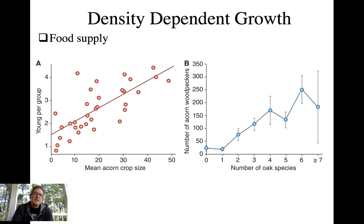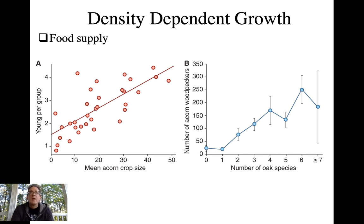Here are some examples looking at acorn woodpeckers — as acorn crop size increases, you get more young produced. The more food available, the greater the production of fledglings, and the populations would increase. If you also look at the diversity of oak species that could be producing acorns more reliably, you see that the number of acorn woodpeckers in the population also increases.